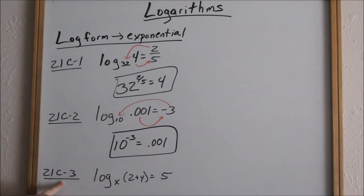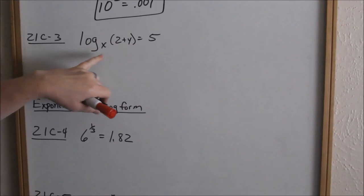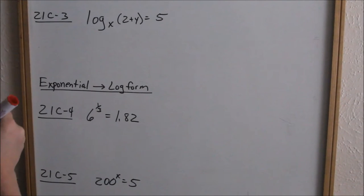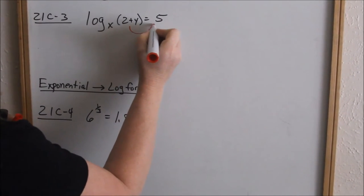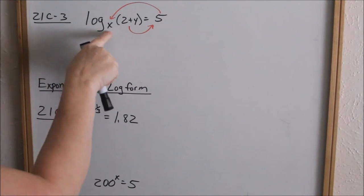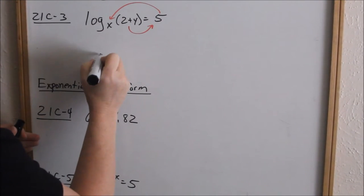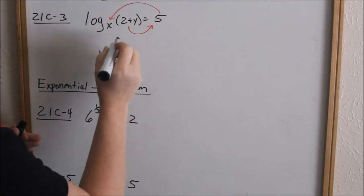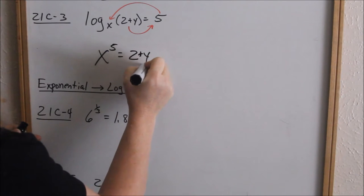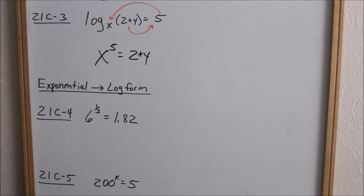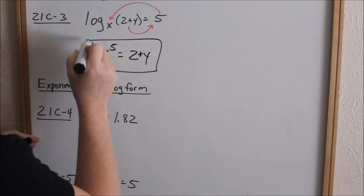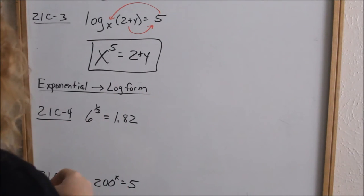Now looking at 21c3: log base x of (2 plus y) equals 5. Going in a circular motion, this becomes your answer, and this number over here becomes the exponent to that. Log base x means x is your base. This is your exponent, and then this becomes the answer. They're not asking you to solve for x or y — they're just asking you to put this in exponential form. x to the 5th equals 2 plus y. That's exponential form.